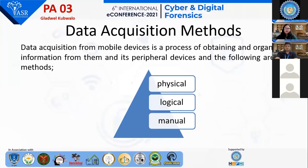Logical data acquisition involves a connection between two machines — the suspect machine and the machine you want to collect data to — and then we collect data from the logical partitions of the suspected machine. Physical data acquisition involves making a bit-by-bit copy of the suspect's hard drive, and this has the potential to recover even deleted data. Most of the time it is advisable to use a write blocker to avoid transfer of data to other machines.